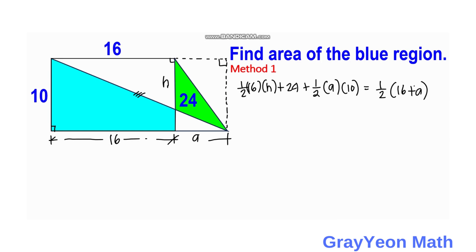So if we simplify this, we have 8H plus 24 plus 5A is equal to 5 times 16 plus A, so we have 80 plus 5A.